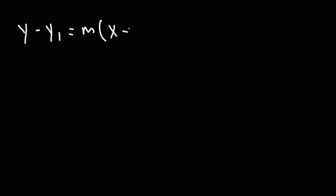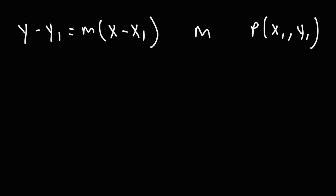The next equation is called the point-slope formula of a linear equation. In order to write a linear equation in this form, you need two things: the slope m, and a point x1 and y1. Notice the difference between x and x1 — x is just a variable, while x1 is the x-coordinate of the point.